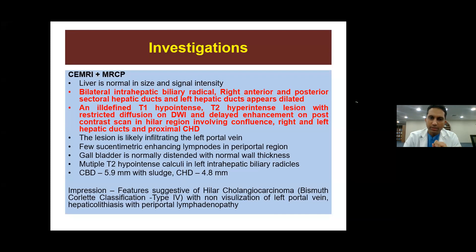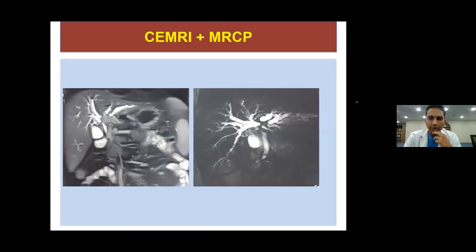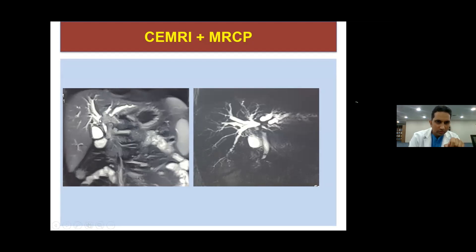The hilar lesion involved the confluence, right and left hepatic ducts, and proximal CHD, with likely infiltration of the left portal vein as it was not visualized. Few sub-centimetric enhancing lymph nodes were present in the periportal region. Gallbladder was normal. There was evidence of hepatic lithiasis in the left intrahepatic biliary radicals. The CHD and CBD showed normal dimensions with some sludge. Final MRI impression: hilar cholangiocarcinoma Bismuth type 4, in view of segmental ductal involvement and left portal vein involvement.